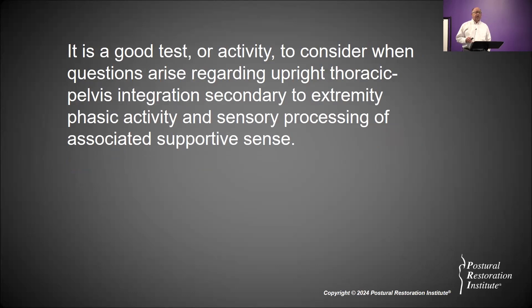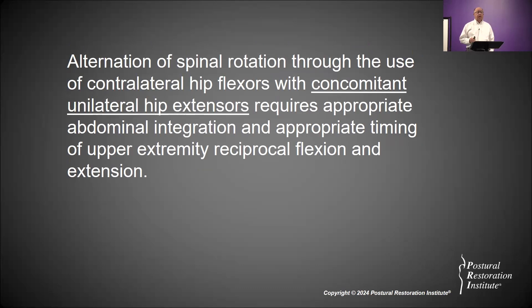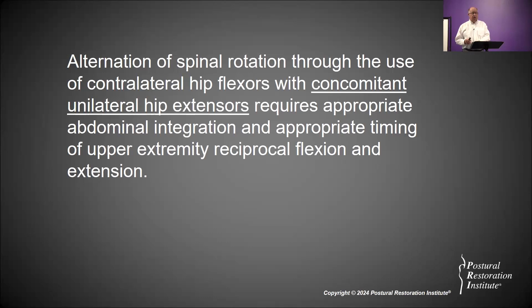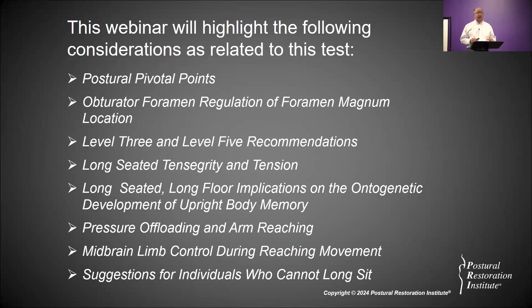It's an interlimb representation of what you can cortically sense and do with the ongoing alternation that these two sites of our body provide. It's a good activity to consider when questions arise regarding upright thoracic pelvis integration secondary to extremity phasic activity and sensory processing of supportive sense. Alternation of our spinal rotation through contralateral hip flexors with concomitant unilateral hip extensors requires appropriate abdominal integration and appropriate timing of upper extremity reciprocal flexion and extension.